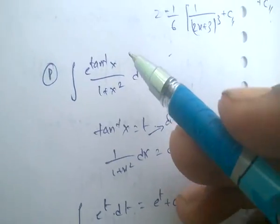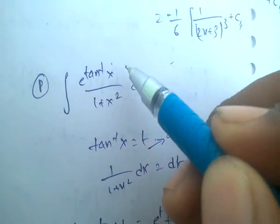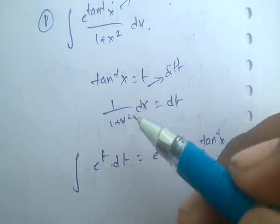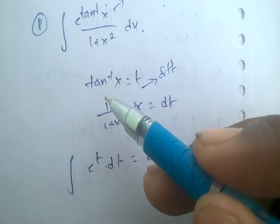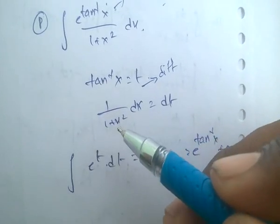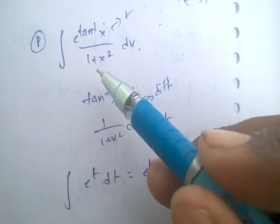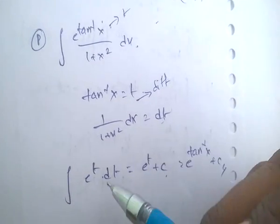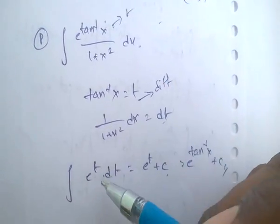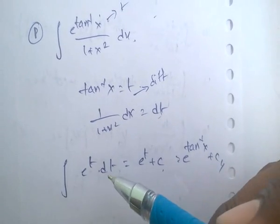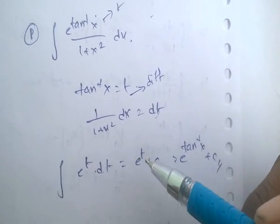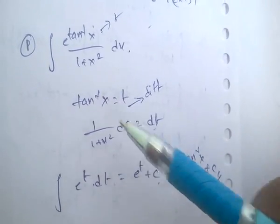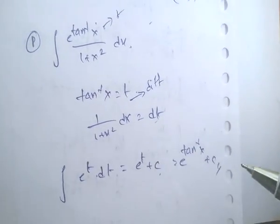For integral of e^(tan⁻¹x) / (1+x²) dx: let t equals tan⁻¹x. Differentiating, dt equals 1/(1+x²) dx. Replace 1/(1+x²) dx with dt and tan⁻¹x with t. The integral becomes integral of e^t dt, which equals e^t plus c. Replacing t back gives e^(tan⁻¹x) plus c.